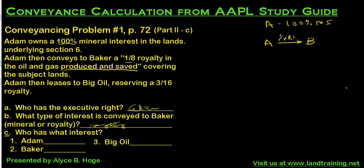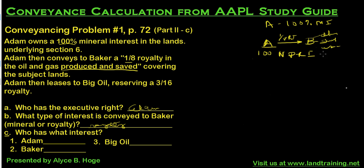Since it's a royalty only, as I mentioned previously, this is called a non-participating royalty interest. 'Non-participating' means that Baker does not have the right to delay rentals, shut-in payments, or ever produce on the land or use the surface. All Baker is entitled to is this one-eighth royalty interest. So at this point, Adam still has 100% of the working interest and Baker has only this one-eighth royalty.